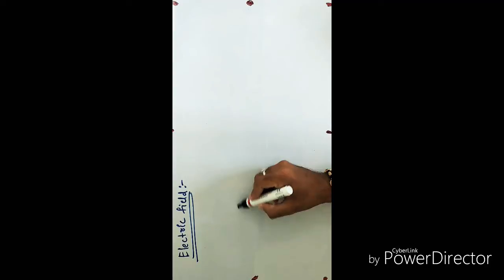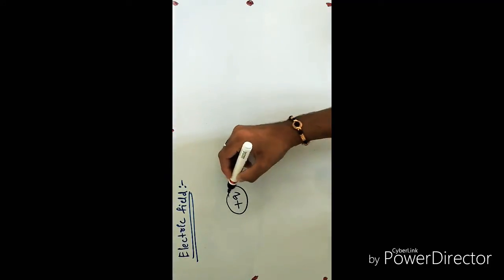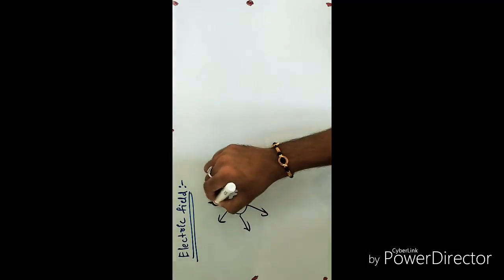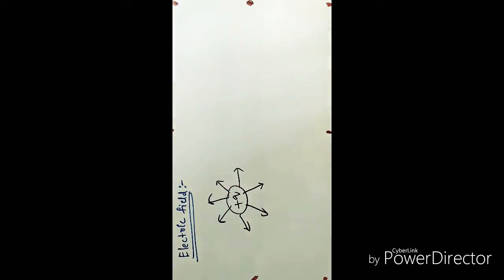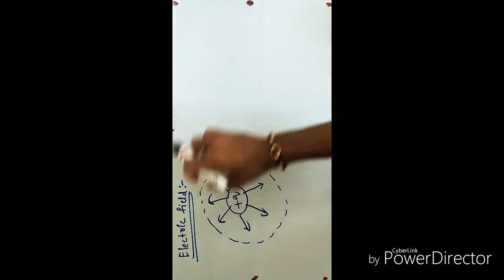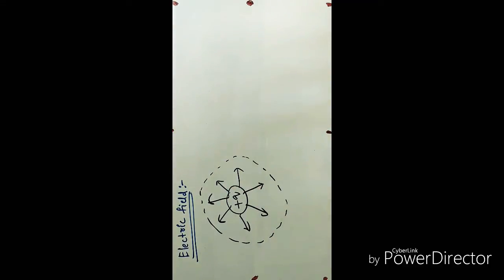So in the previous video, I said that suppose for a charge, there will be some range where the impact of this charge will be present on other charges. Suppose I consider this is the range for this charge. For this charge, this is the range where it can show effect on other charges.